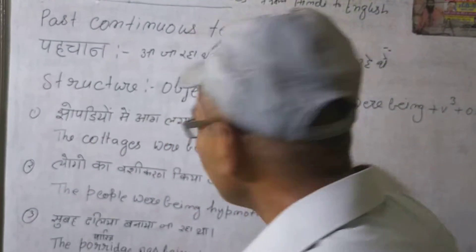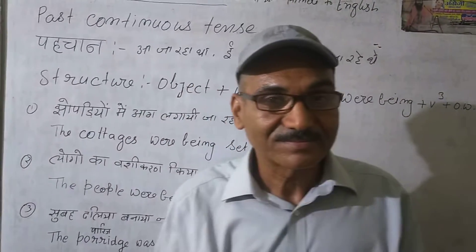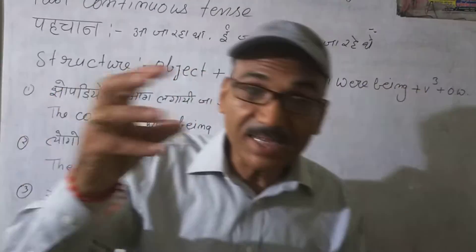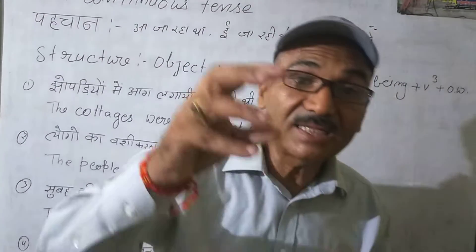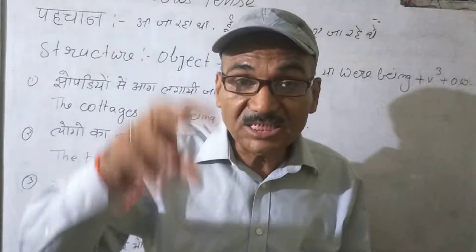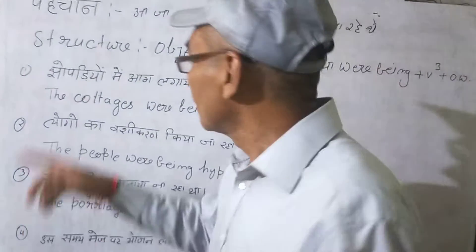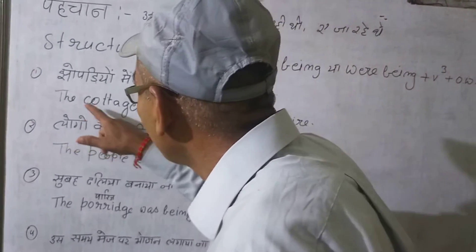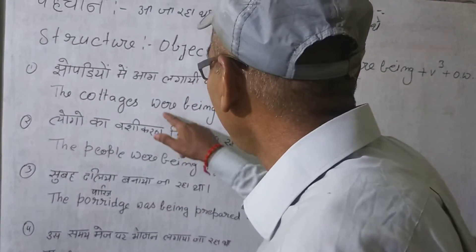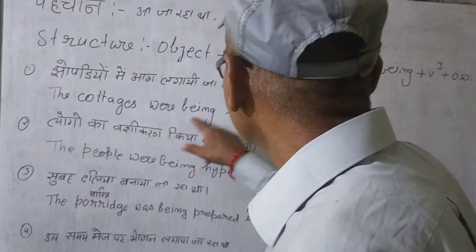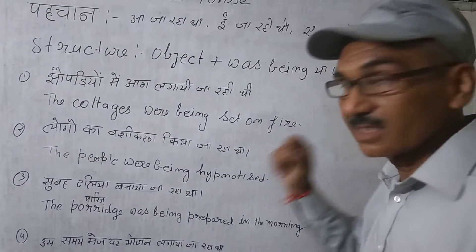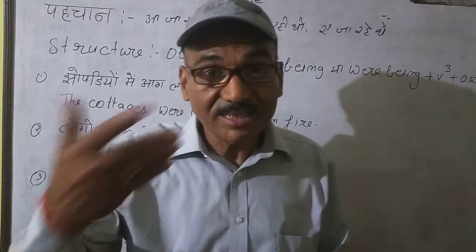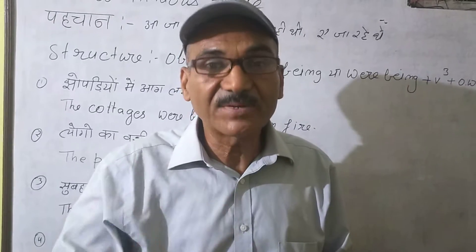The first example: 'जोपड़ियों में आग लगाई जा रही थी।' यहाँ आग लगाने वाला गायब है — focus object पर है जिस पर काम हो रहा है। English: 'The cottages were being set on fire.' 'Set on fire' means आग लगाना — यह phrase English newspapers में अक्सर आता है।